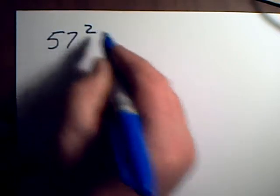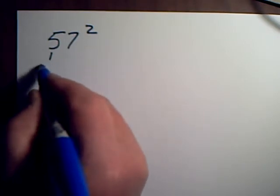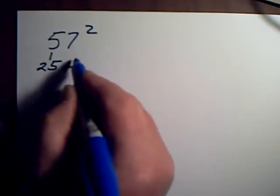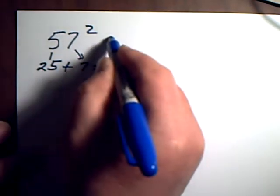Okay, this is a neat little trick for how to square anything in the 50s. So let's look at 57 squared. For the five, you take 25 and then you add on the other digit seven. That gives you 32.